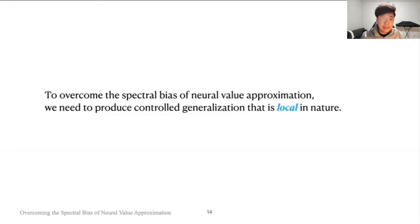So to overcome the spectral bias of neural value approximation, we need to produce a controlled generalization function that is local in nature. And the question is, how do we do that?